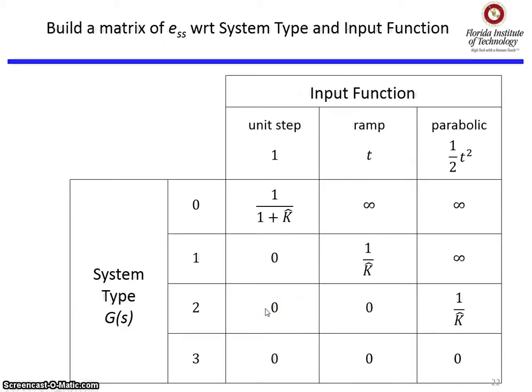Now that I've done all that math, I basically have calculated the values that go into this nice table here. The way this table works is every value in the table is the formula or the value of the steady-state error. So here's a value where steady-state error is infinity, steady-state error is zero, steady-state error is 1 over K hat.